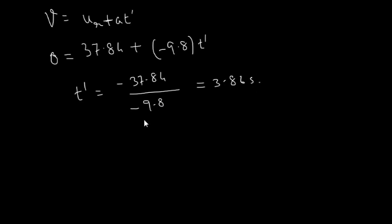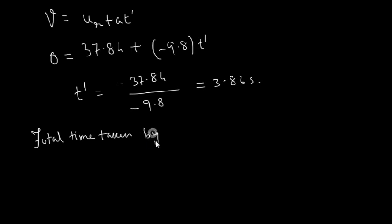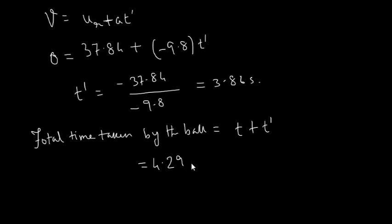The total time taken by the ball for the first rebound cycle is t + T' = 4.29 + 3.86, which equals 8.15 seconds.